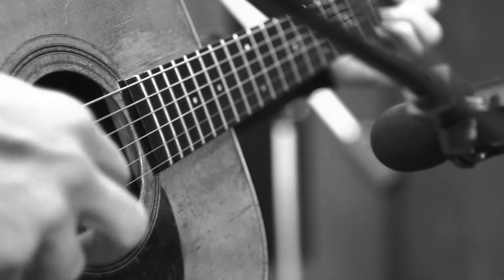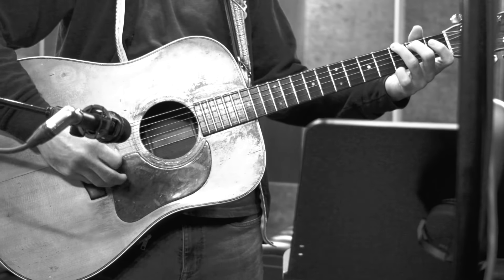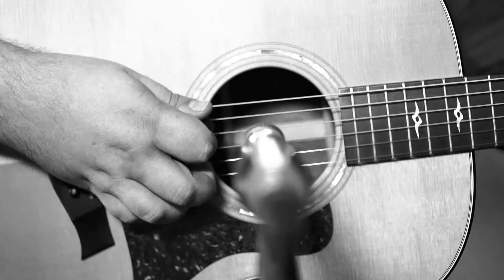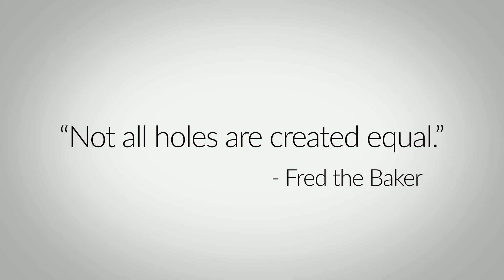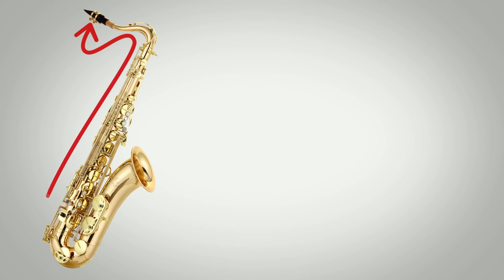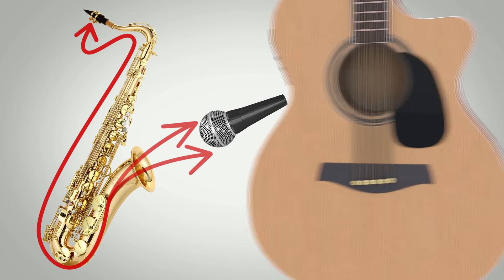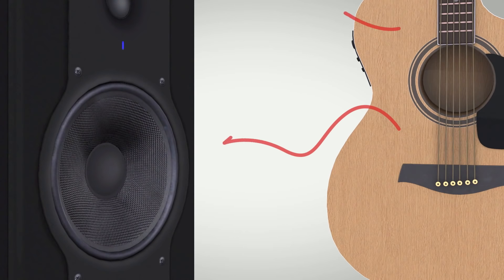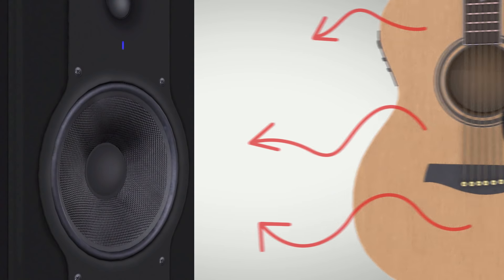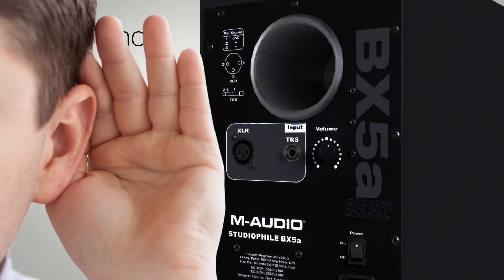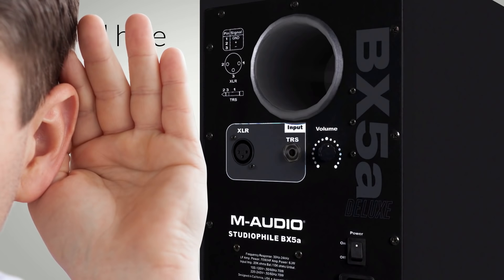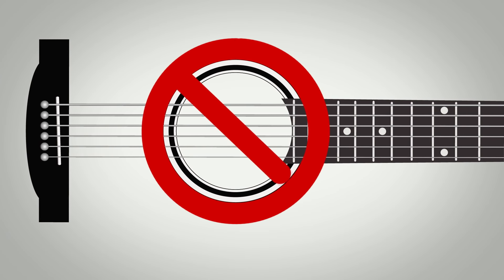Easily the most common mistake I see people make when recording acoustic guitar is placing the mic in front of the sound hole, which seems like an obvious choice but results in boomy, unflattering recordings. The sound hole on an acoustic guitar isn't like the bell of a saxophone, where the vibrating reed gets amplified like a megaphone. A guitar functions more like a speaker cone, where the whole surface vibrates to project the sound. The sound hole is doing what bass ports do on your monitors — channeling and projecting low frequencies — and just like you wouldn't put your ear up to a bass port, you wouldn't want to stick a mic there.